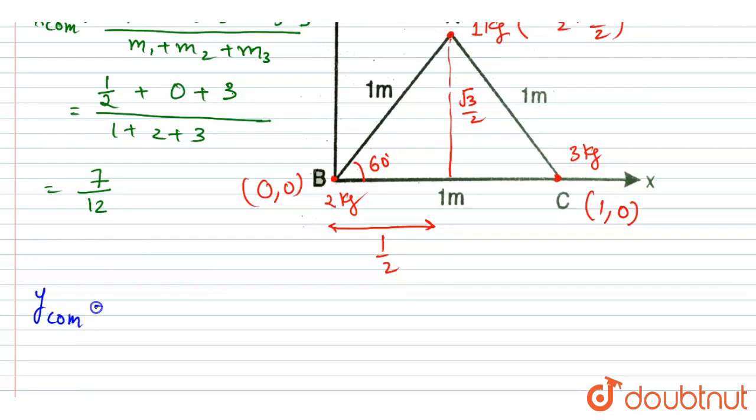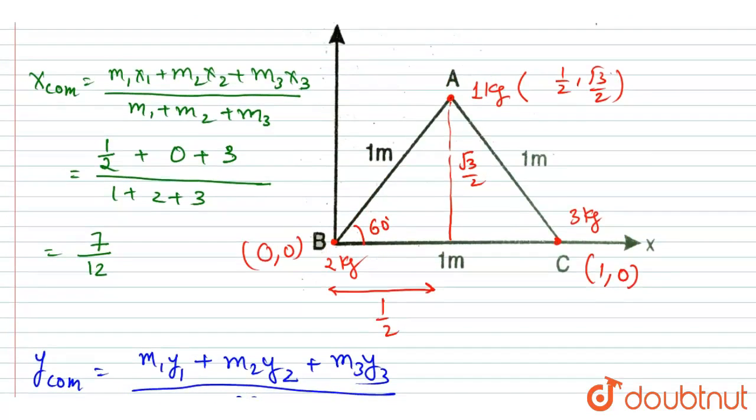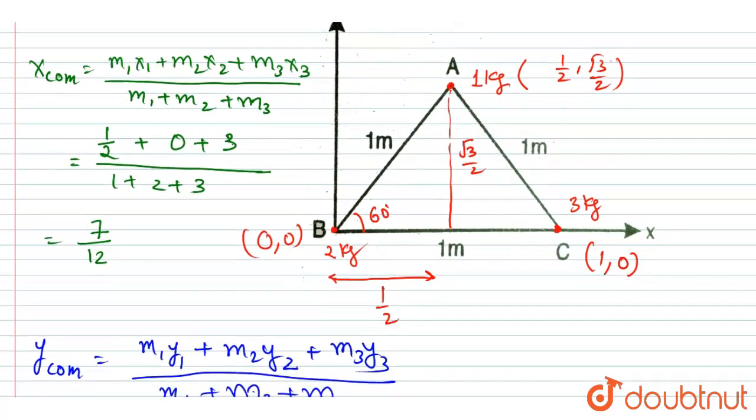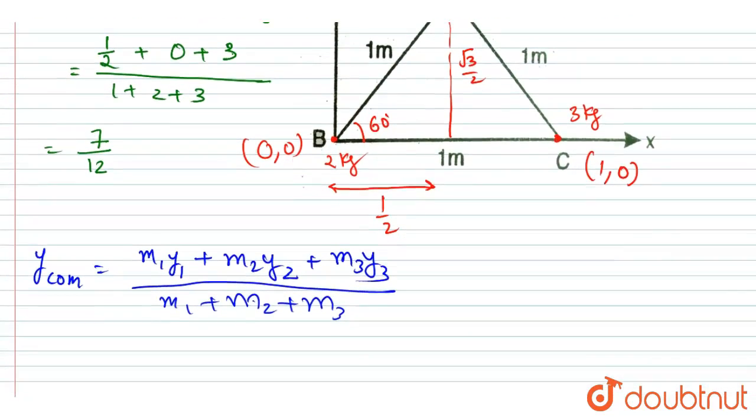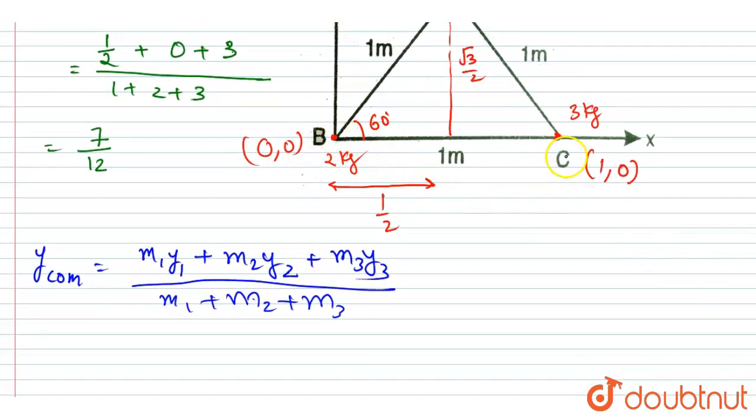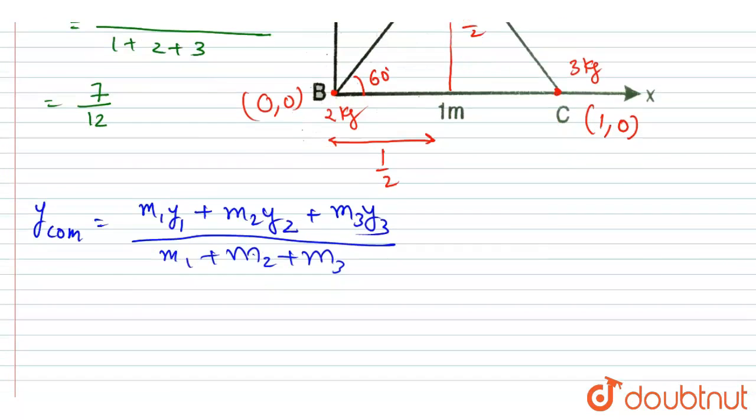That is m1·y1 + m2·y2 + m3·y3 divided by total mass. And just see here the y-coordinates now. The y-coordinate of A is root 3 by 2, and the other two, like B and C, have 0 y-coordinate, right? So I will write root 3/2 times 1.